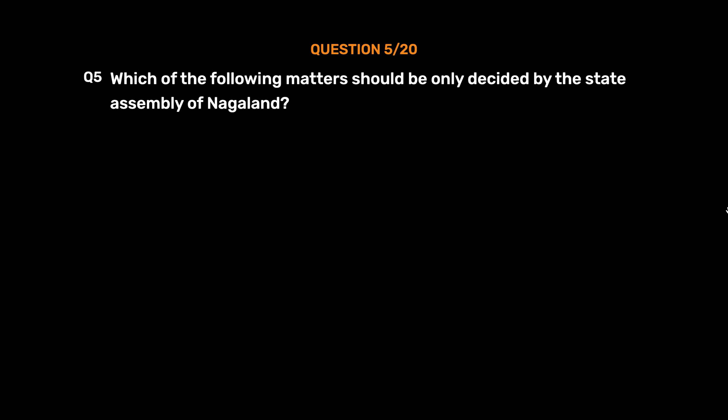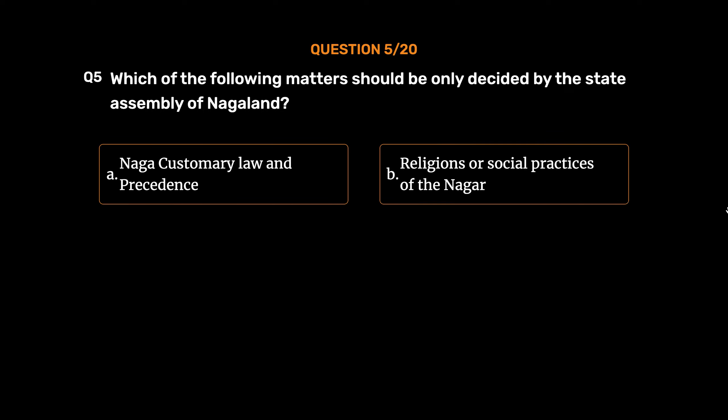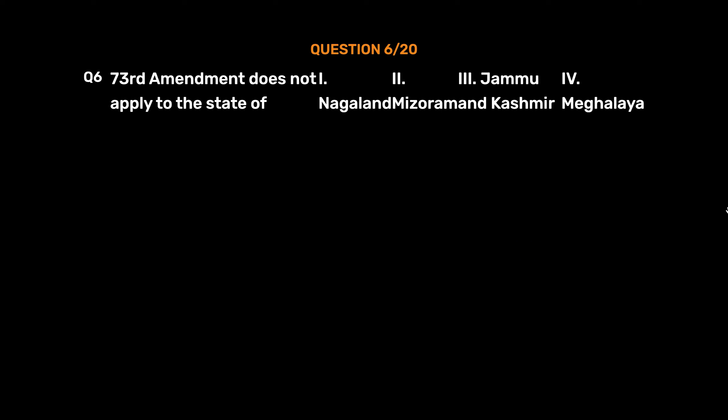Question No. 5: Which of the following matters should be only decided by the State Assembly of Nagaland? Option A: Naga Customary Law and Precedence. Option B: Religious or Social Practices of the Nagas. Option C: Ownership and Transfer of Land and Its Resources. Option D: All of the Above. The correct answer is Option D: All of the Above.